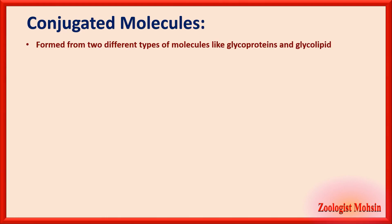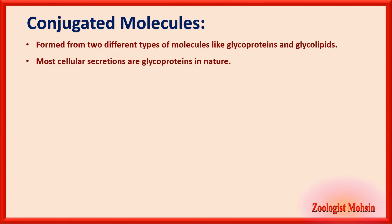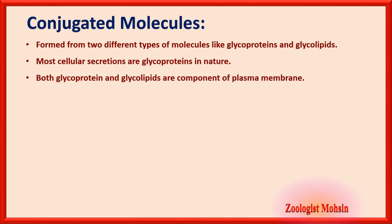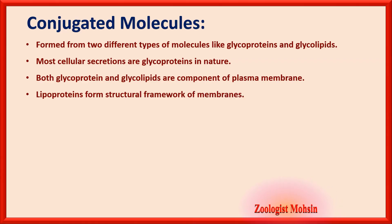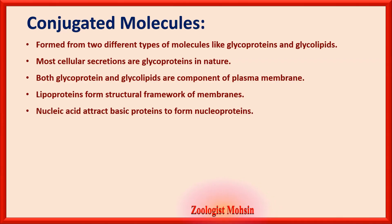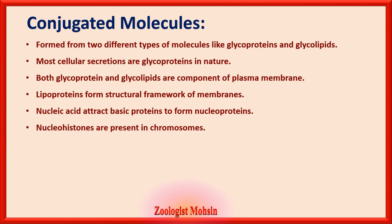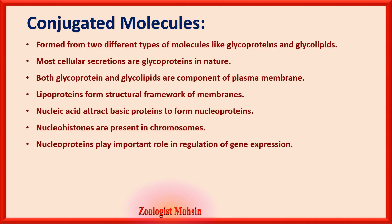Conjugate molecules are formed from two different types of molecules. Glycoproteins are combinations of carbohydrates and proteins; glycolipids are combinations of carbohydrates and lipids; lipoproteins are combinations of lipids and proteins. Most cellular secretions are glycoproteins. Both glycoproteins and glycolipids are components of the plasma membrane. Lipoproteins form the structural framework of the membrane. Nucleic acids attract basic proteins to form nucleoproteins, which are present in chromosomes and play an important role in the regulation of gene expression.